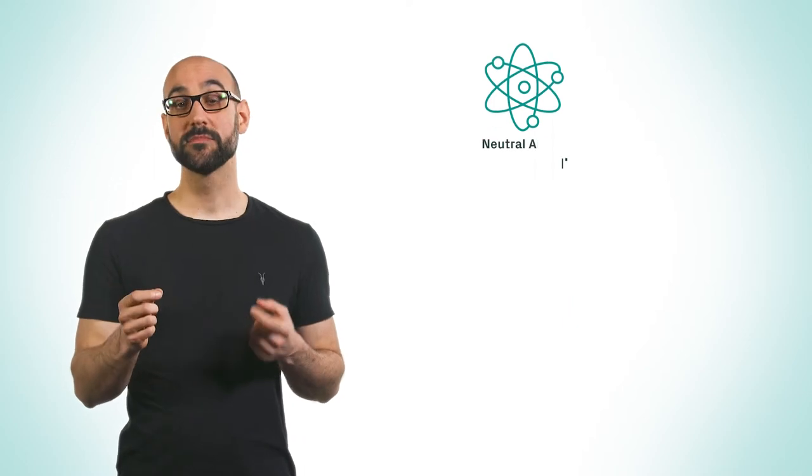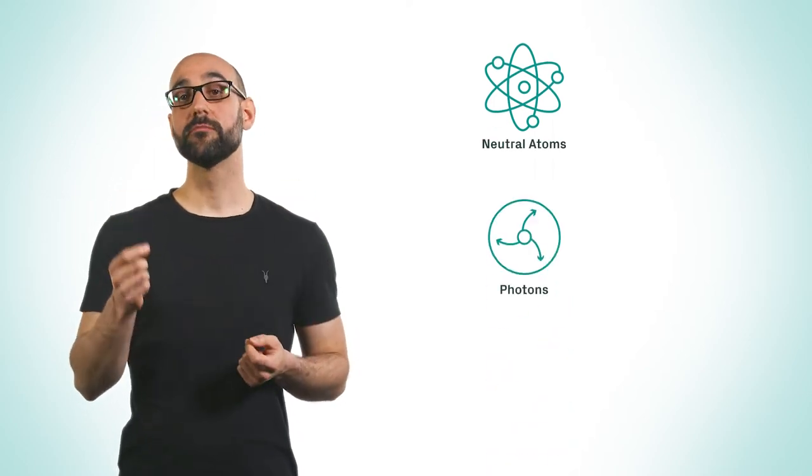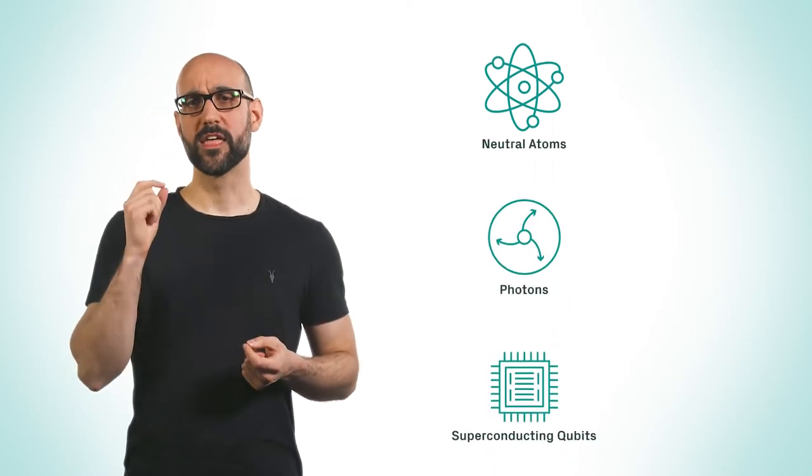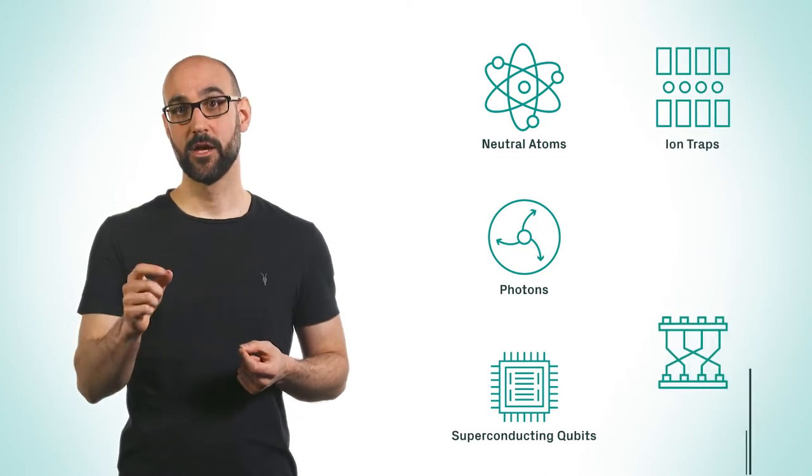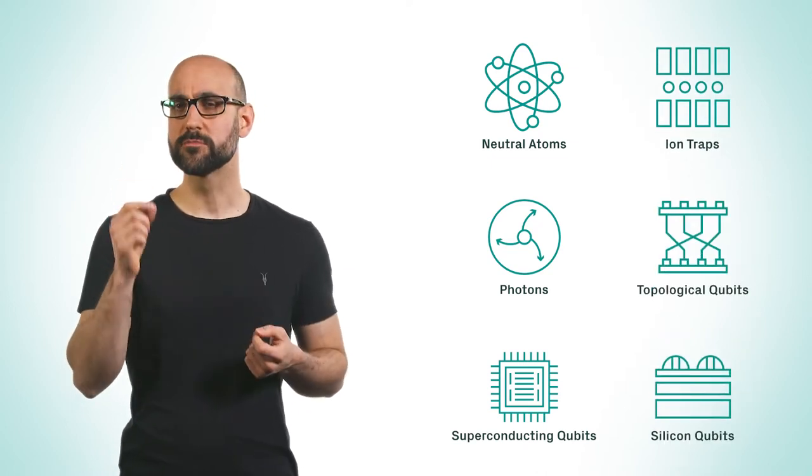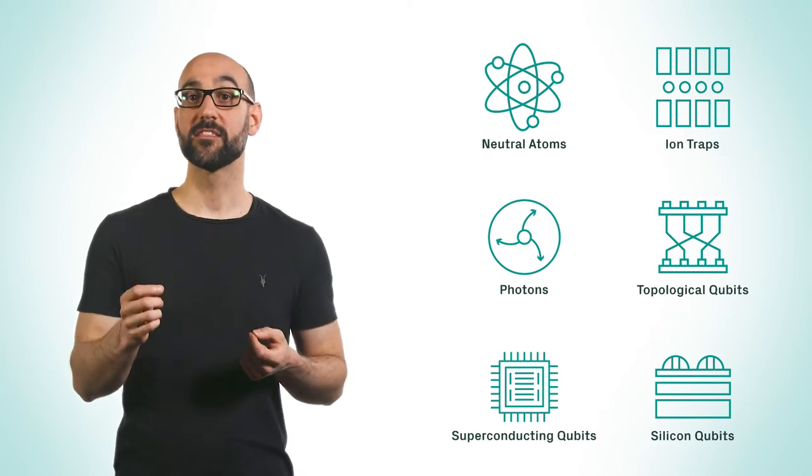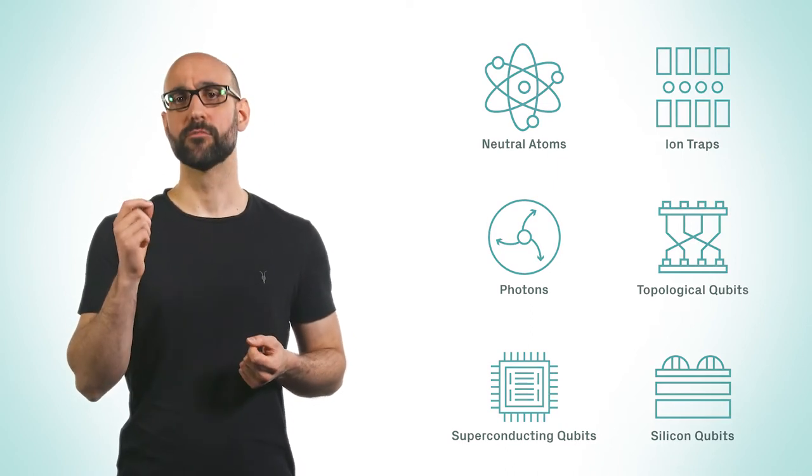Qubits come in many different types. Some are single atoms, some are photons of light, some are superconductors. But there's no one predominant type. You could say we haven't decided yet which one will be the quantum transistor. And it's likely that we'll need different types for different problems.